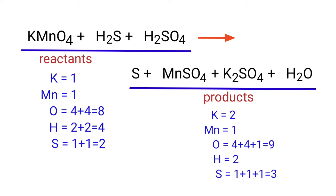The number of atoms are not balanced on both sides. To balance the chemical equation, we need to make use of coefficients. A coefficient is a number that we place in front of a chemical formula.